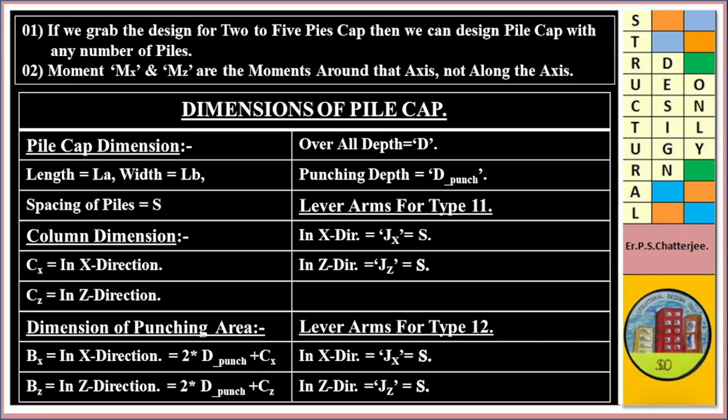Dimensions of pile cap: Length equals LA, width equals LV, spacing of pile equals S, column dimension in X direction CX, in Z direction CZ. Dimension of punching area BX in X direction equals 2 into D punch plus CX. BZ in Z direction equals 2 D punch plus CZ. Overall depth D, punching depth D punch.